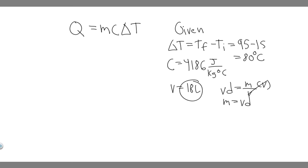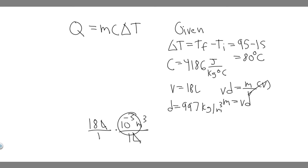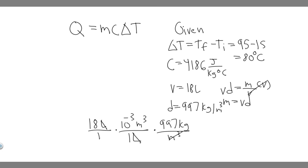The volume is 18 liters, and we need to multiply by the density. The density of water is 997 kilograms per meter cubed. So we need to make sure our volume is in meters cubed — we have to do a conversion. We have 18 liters, and to convert to meters cubed we multiply by 10 to the minus 3, so 18 times 10 to the minus 3 meters cubed equals 18 liters. Then multiply by the density of 997 kilograms per meter cubed. The meters cubed cancel, and we go from liters all the way to kilograms.